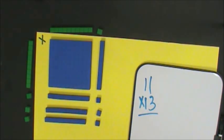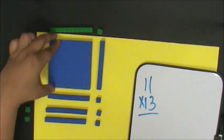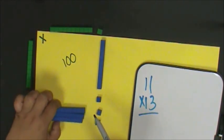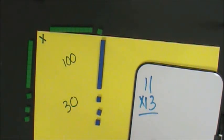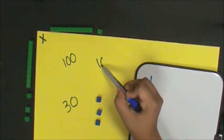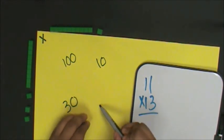I now have my partial products. The value of the hundreds is 100. The value of my tens is 30. The value of my 10 is 10. The value of my ones is 3.